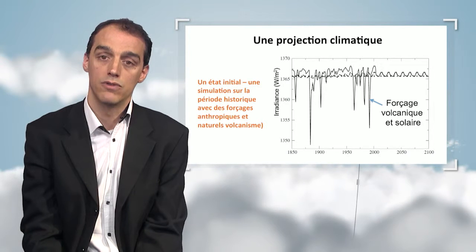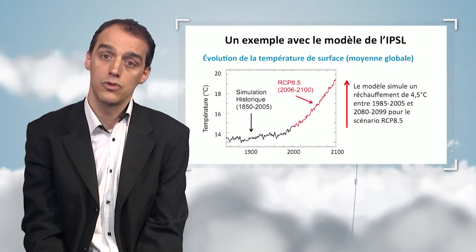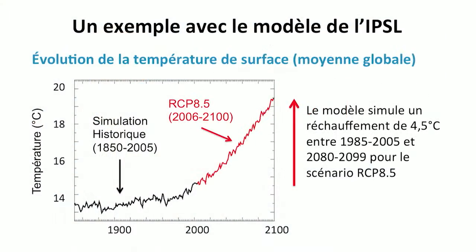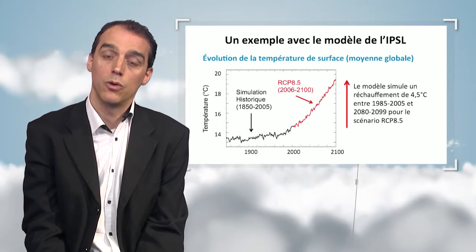Once greenhouse effect gas evolution is recorded, it is possible to make a projection. Here we have the IPSL model showing the evolution of the average temperature on the global surface between 1850 and the end of the 21st century. In black, we see the evolution of temperature in the historic simulation, and the end of the historic simulation serves to initialize the projection. In red, we have the temperature calculated between 2005 and 2100. In the RCP 8.5 scenario, CO2 and other gas emissions lead to a simulated warming of plus 4.5 degrees by the end of the century versus the current temperature.